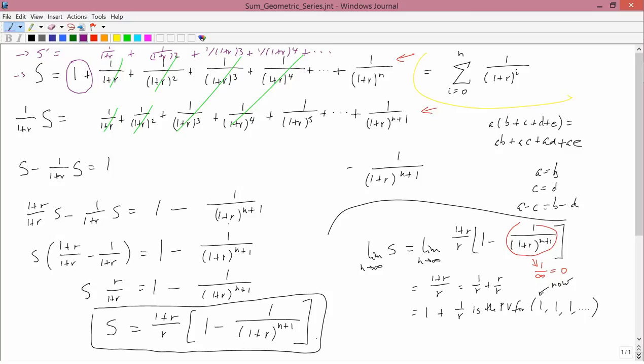The present value of S prime is going to be the present value of the limit of S, as N goes to infinity, minus 1. Because that's the difference between S prime and S is just that one in the first year. I already know what the present value of S is, as N goes to infinity. That's 1 plus 1 over R, so if I subtract 1 from it, I get 1 over R.